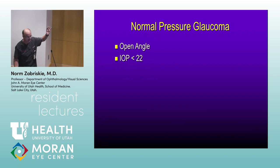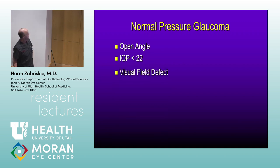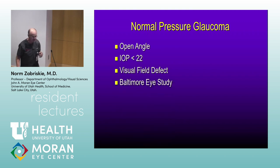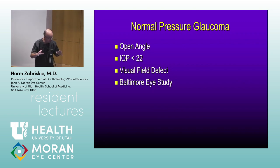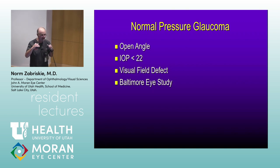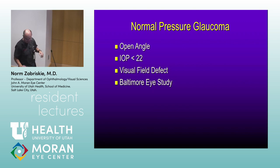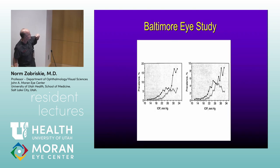By definition in normal pressure glaucoma, there's an open angle, the pressure is not greater than 22 in the untreated state, and the patient has a visual field defect — so they actually have glaucoma. Let's talk about two very important studies: the Baltimore Eye Study and the Normal Tension Glaucoma Treatment Trial.